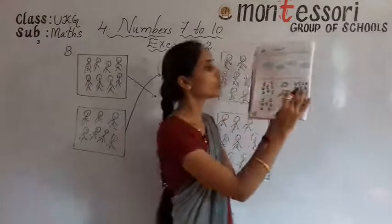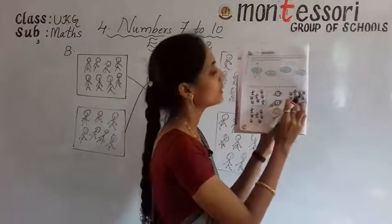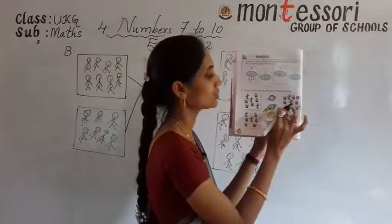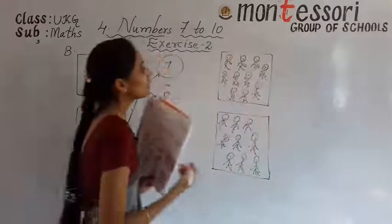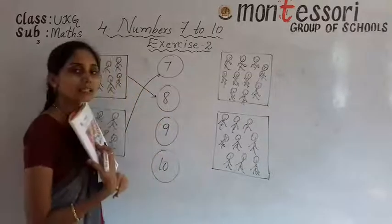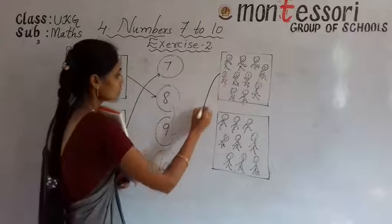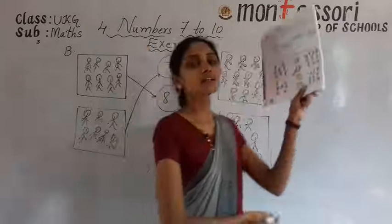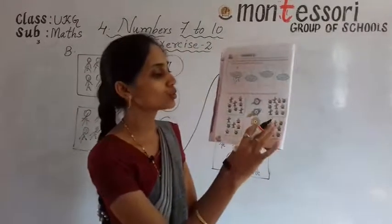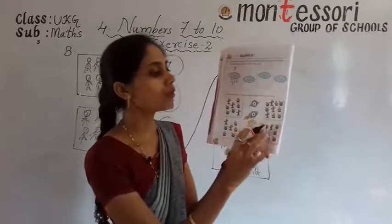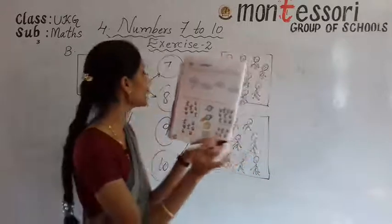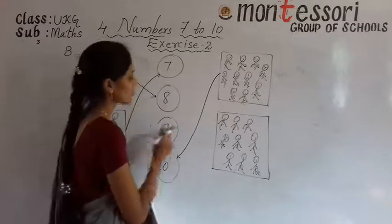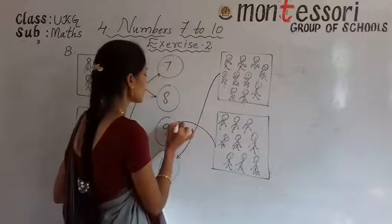Here in the third box, how many toys are there? 1, 2, 3, 4, 5, 6, 7, 8, 9, 10. There are 10 toys. So where is the number 10? You have to match to the number 10. Next, in the last box, how many toys are there? 1, 2, 3, 4, 5, 6, 7, 8, 9. There are 9 toys. Where is the number 9? Here it is. So you have to match to the number 9.